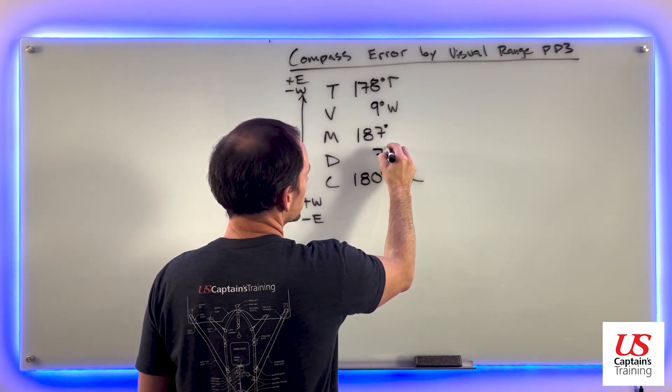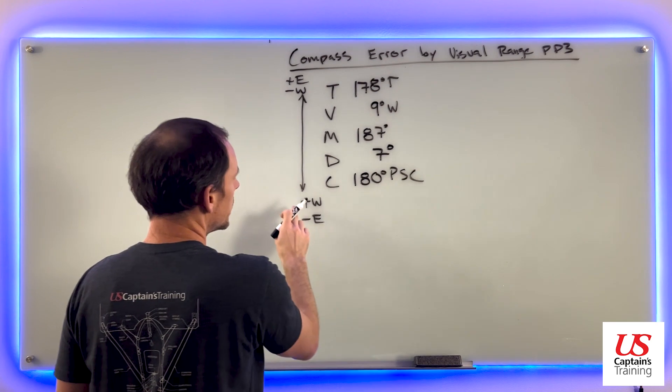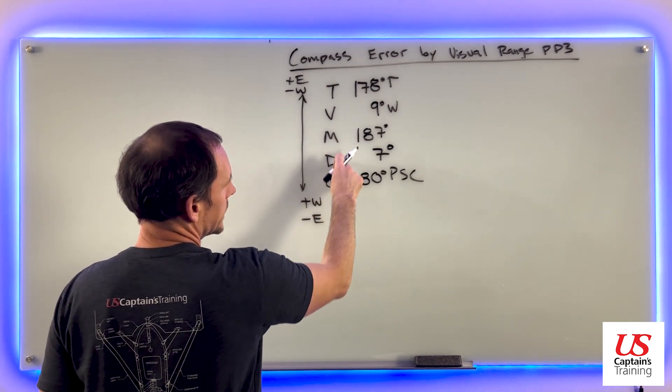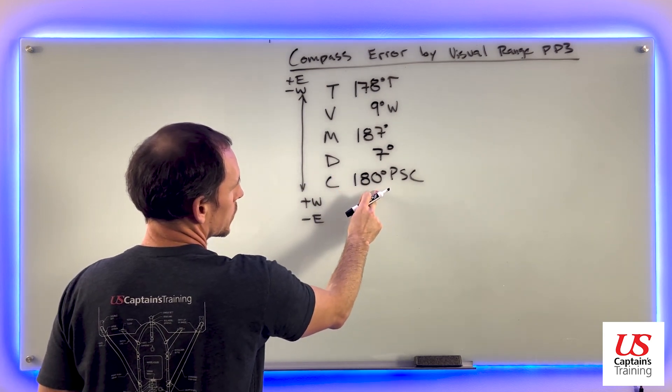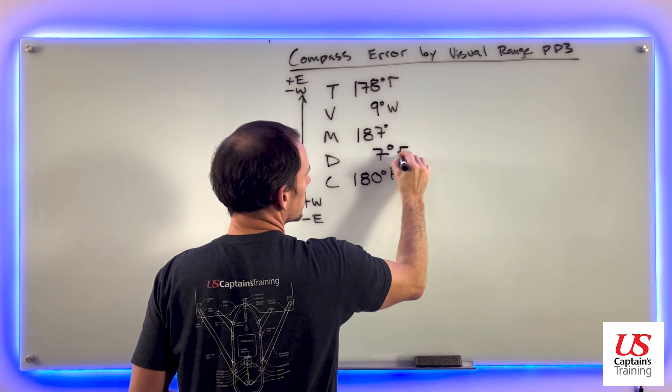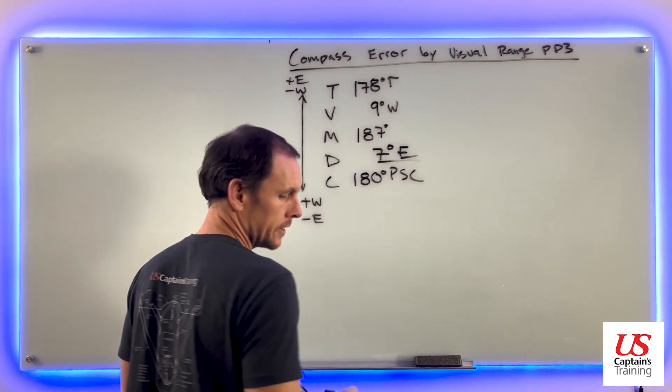So 7 degrees. Is this going to be east or west? Well, we're going from 187 down to 180. We're subtracting. It's going to be east. So we got 7 east is our answer.